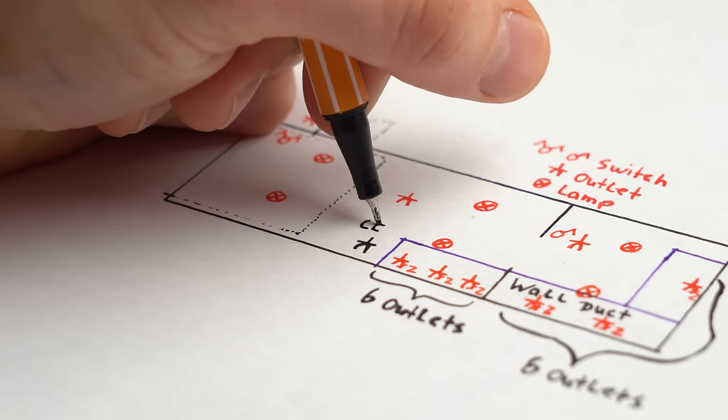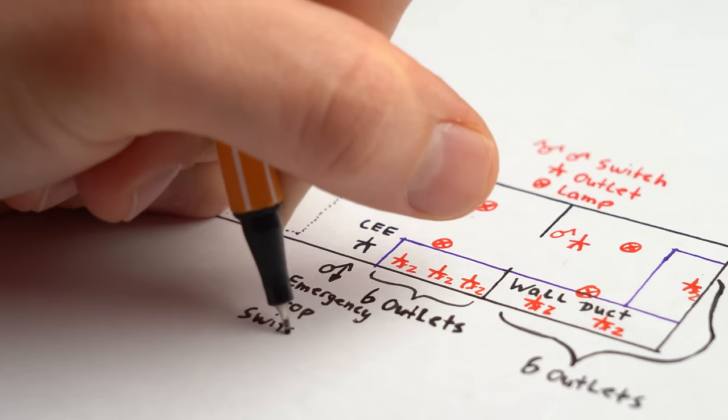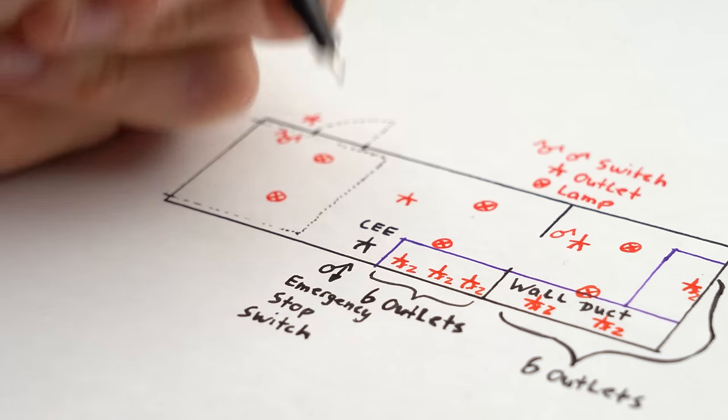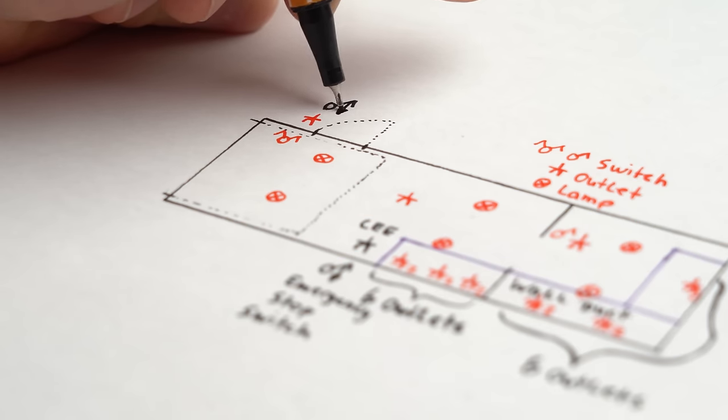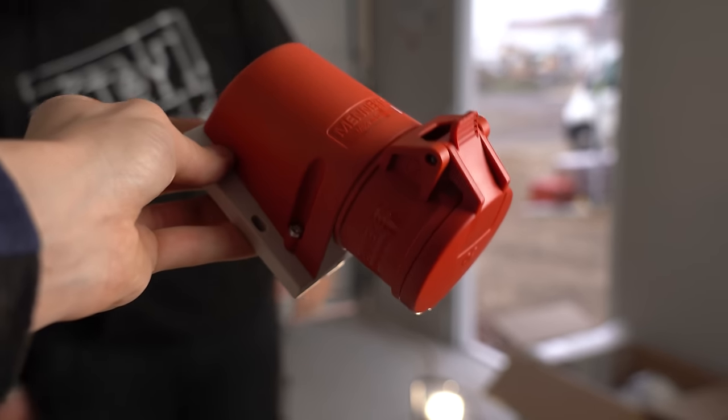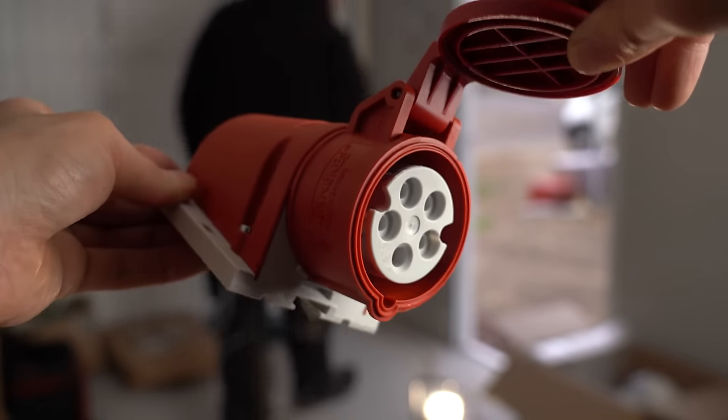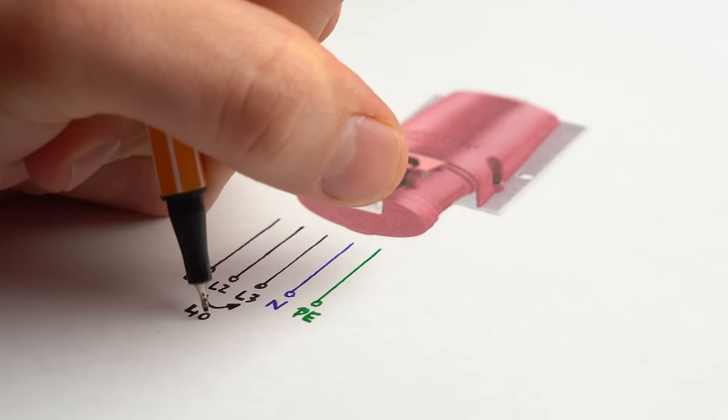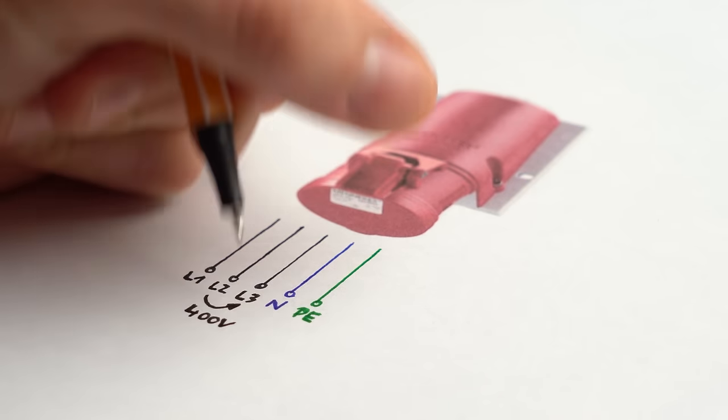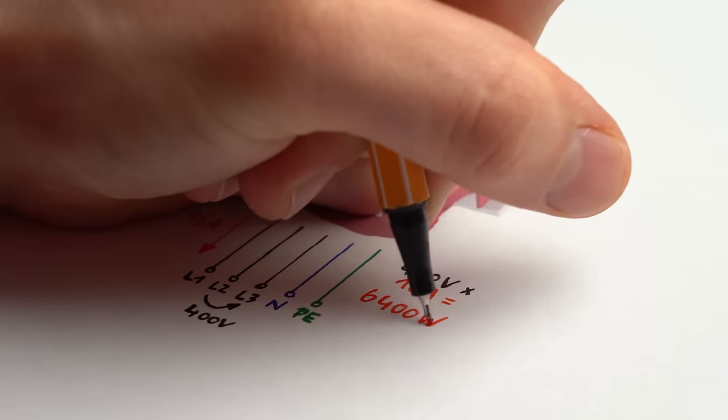But what I think is also awesome would be a CEE socket here and two emergency stop switches, one here and one next to the entrance. In case you don't know, CEE sockets look like this and are basically normal outlets on steroids, because they can supply 3-phase mains power with 400V, which means I can hook up some really high power stuff later on.